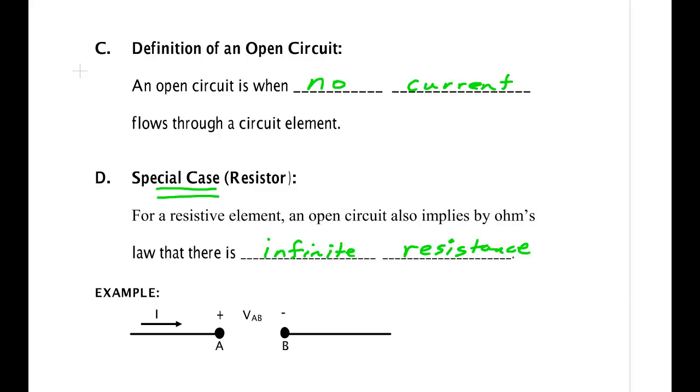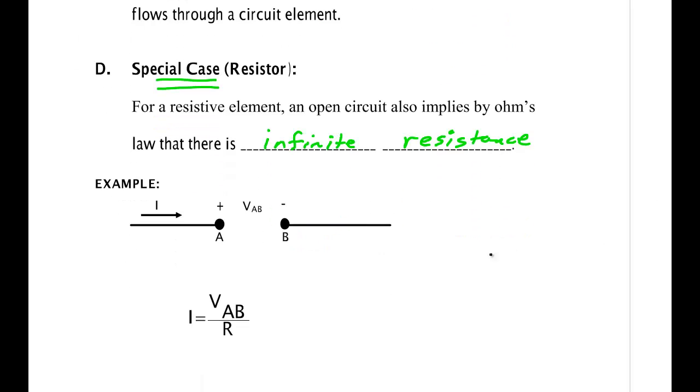So for instance in this particular thing, if you had this as your circuit element and we know that the current is equal to zero even though VAB was 10 volts, so it's 10 volts divided by R, then the only way that could be is that R has to equal infinity.